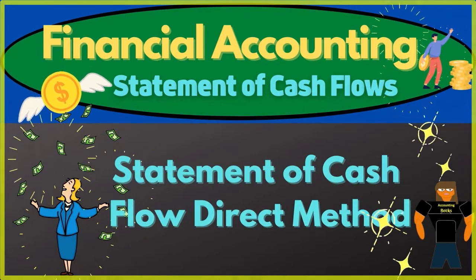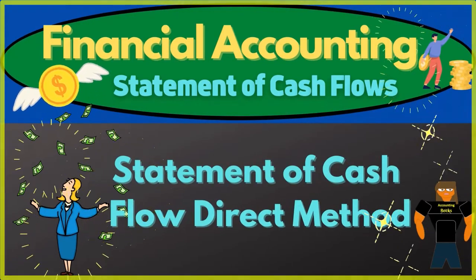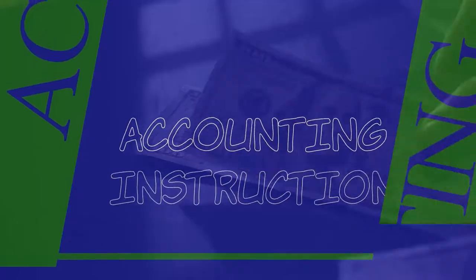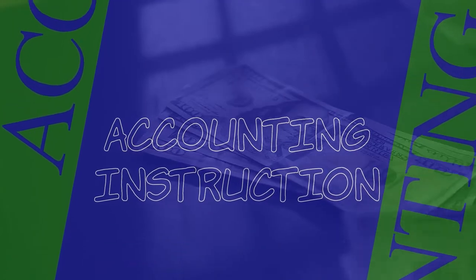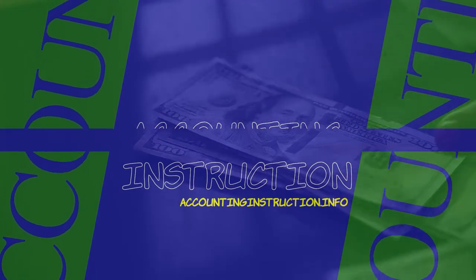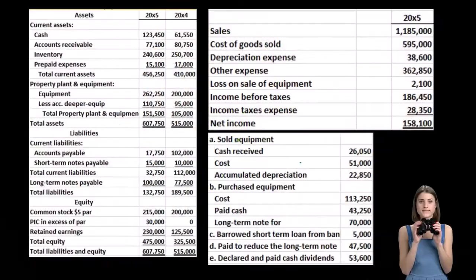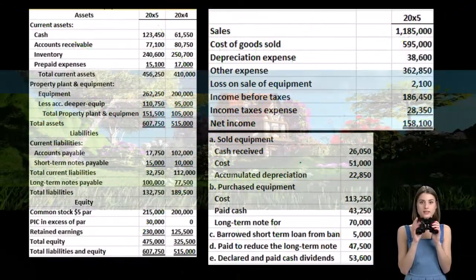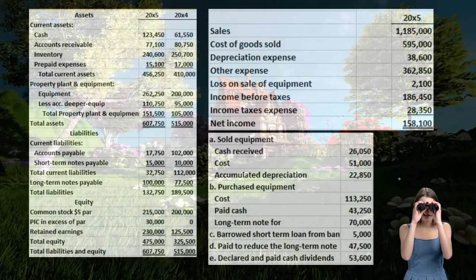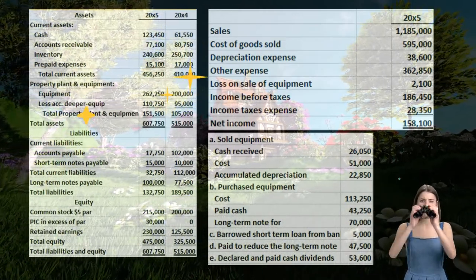In this presentation, we will take a look at the statement of cash flows using the direct method. Here's going to be our information: the comparative balance sheet, the income statement, and some additional information. We will use this information to put together our worksheet, which will be the primary source used.